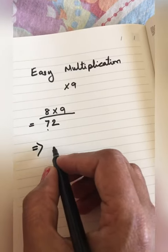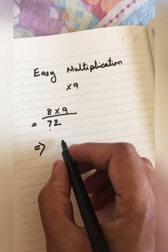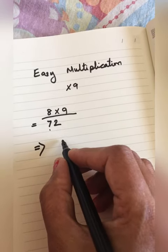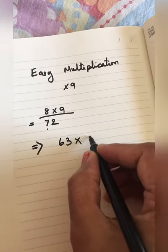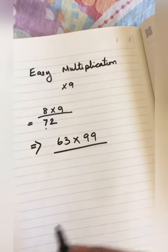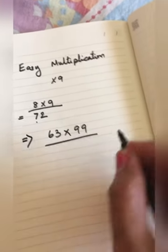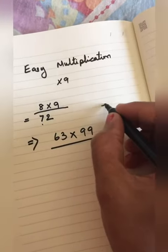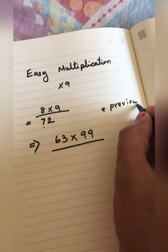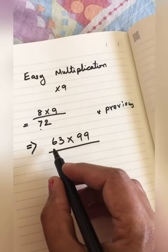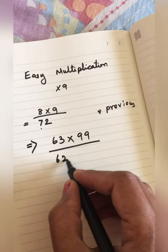Let's do it for 2-digit numbers. For example, now we are going to multiply 63 with 99. Using the same method, first we have to write the previous number. So what is the previous number for 63? It is 62.